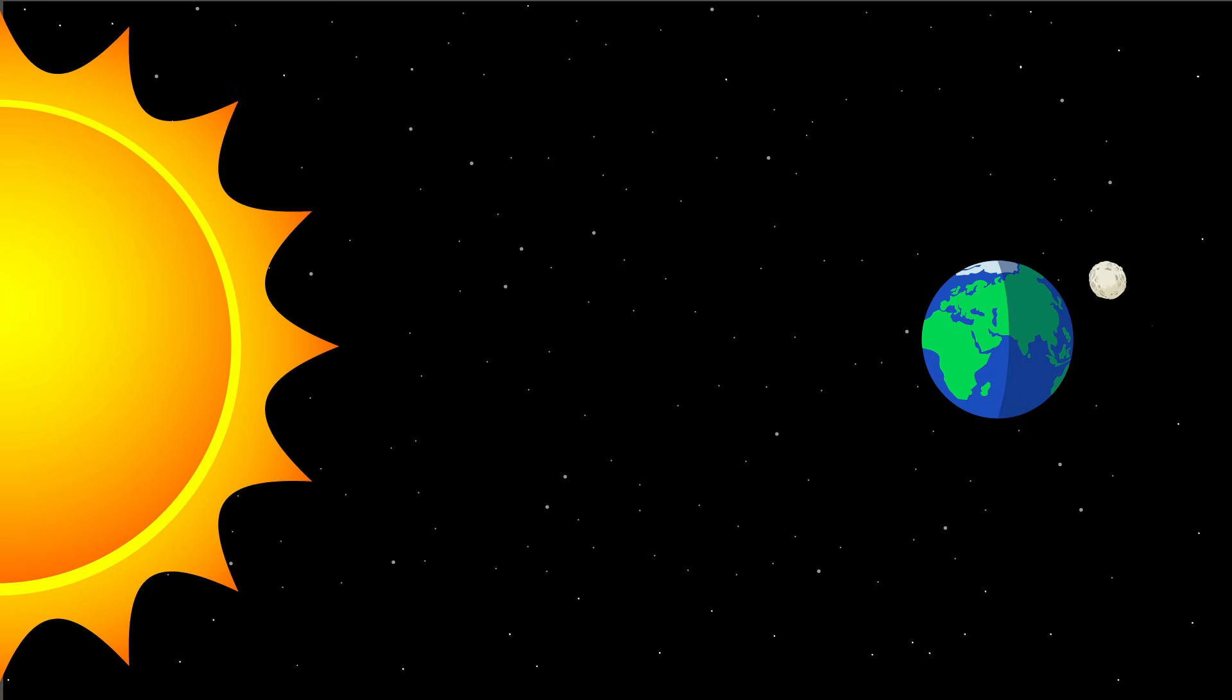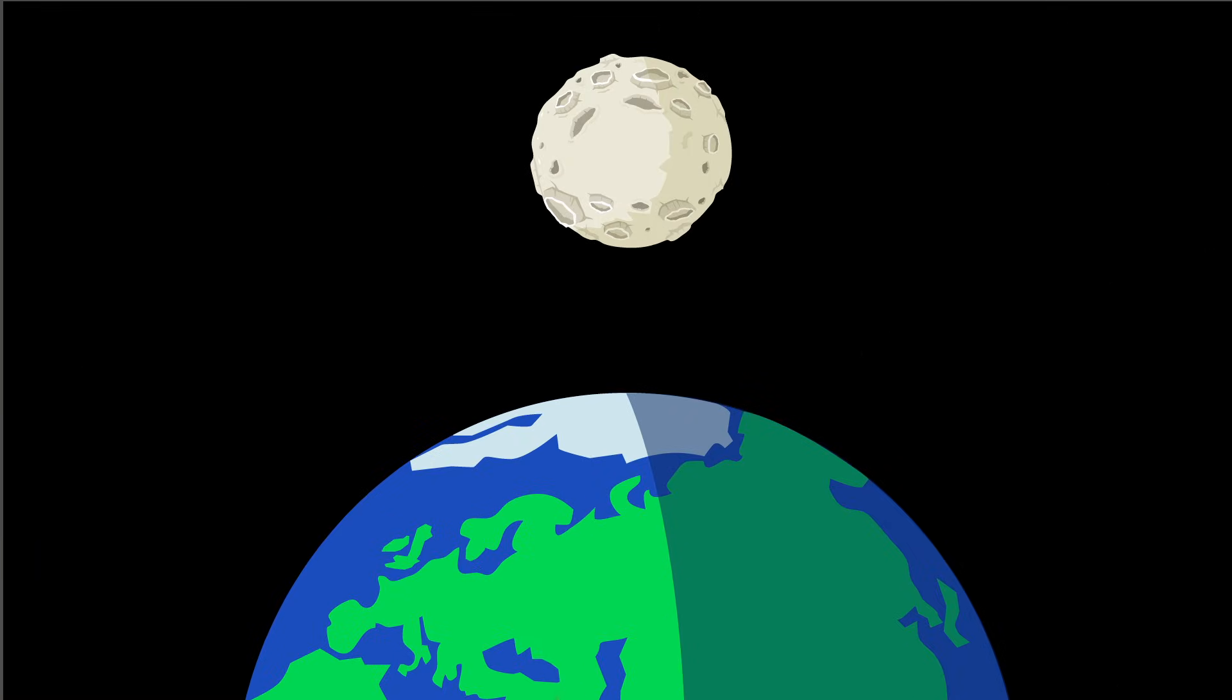On average, the Moon and Earth are the same distance from the Sun, so they get the same amount of solar energy. But here, the average temperature is 16 degrees Celsius, while on the Moon, it's more like minus 80.